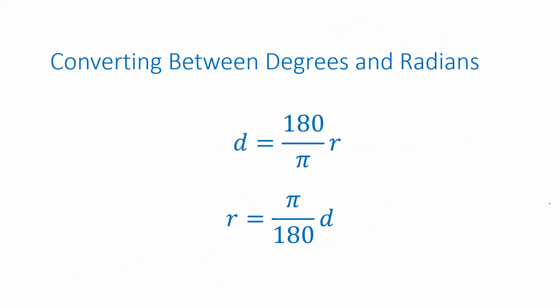Now you can memorize these formulas, or you can memorize the fact that if you have d degrees, then d over 360 is the fraction of a rotation. r radians—r over 2π is a fraction of a rotation. And if these represent the same angle, then these quantities have to be equal. Instead of memorizing these two things, you can always come up with these things by starting with this relationship and solving for the variable you want in terms of the one you have. So we'll do two examples.